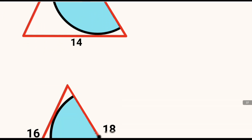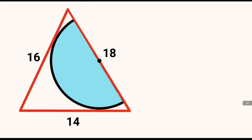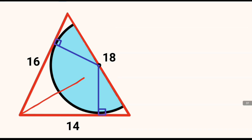The first step is to introduce two radii with respect to the semicircle, each perpendicular to the sides of the triangle at the point of tangency. We introduce a line segment from that vertex to the center of the semicircle, which will divide the original triangle into two parts.